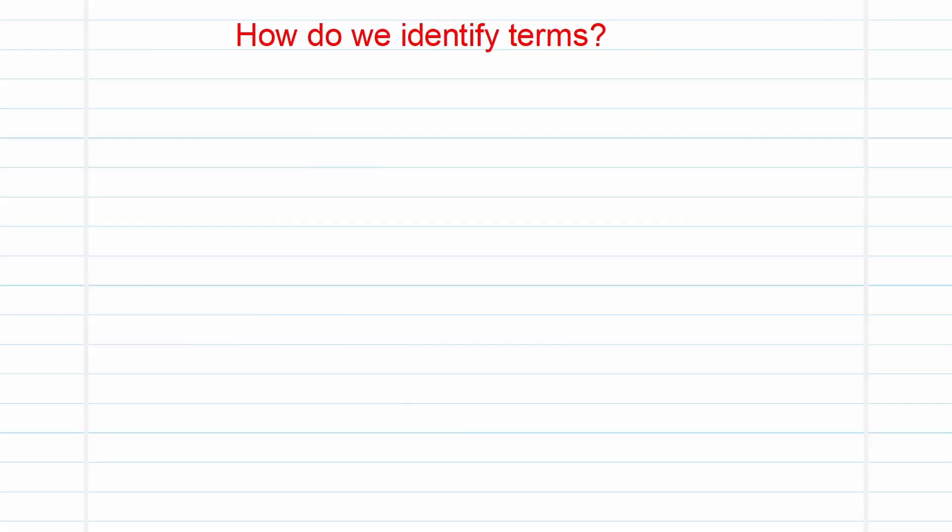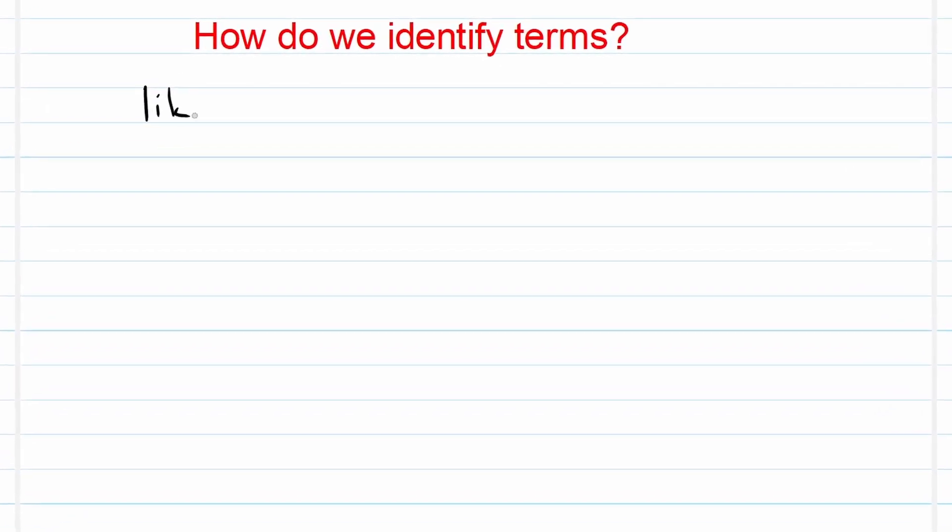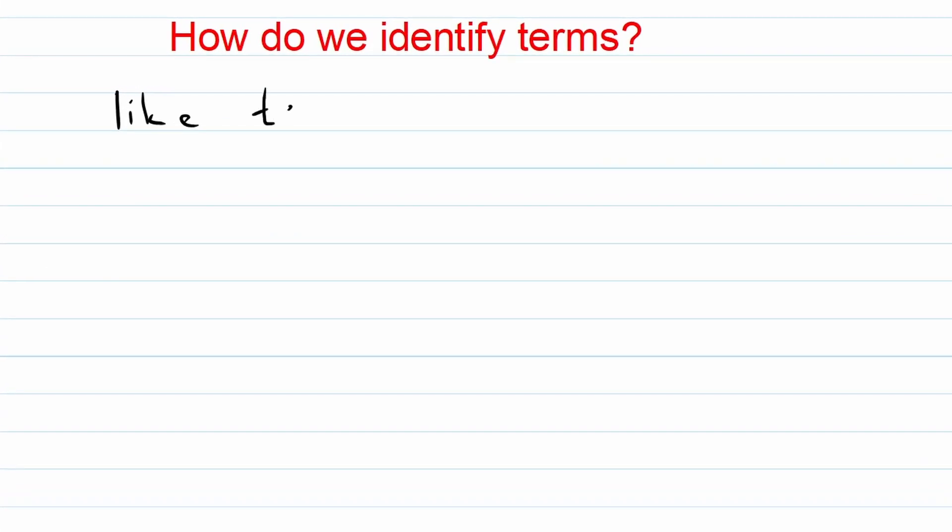Okay, how do we identify terms? Now when we get terms, you need to understand that you get like terms and then unique terms. Like term is a term that is of the same variable. As an example,